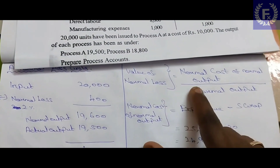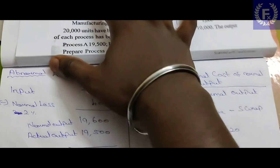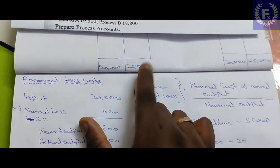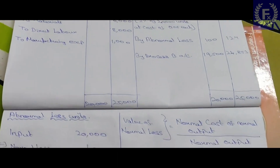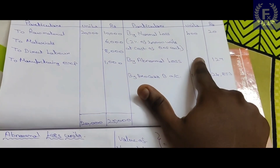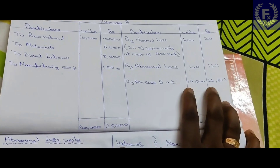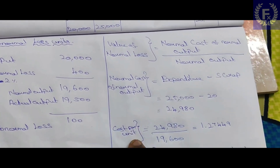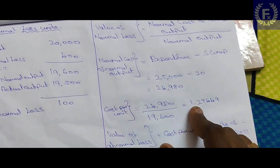Now, the value of normal loss and cost per unit. The formula is: Normal cost of normal output divided by normal output. Normal cost of normal output equals total expenditure minus scrap value. Total expenditure is 25,000 and scrap is 20. So, normal cost = 25,000 minus 20 = 24,980. Cost per unit = 24,980 divided by 19,600 = 1.27449.